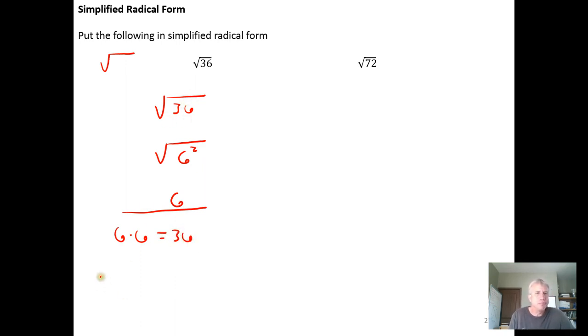Notice that negative 6 times negative 6 would also equal 36, but by definition, when we take the square root of a number, we are looking for the positive square root—the positive root.